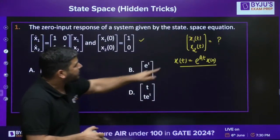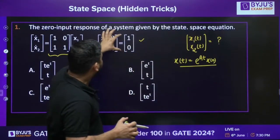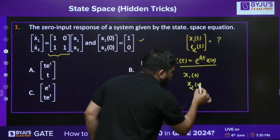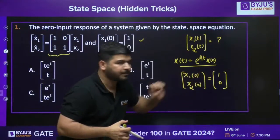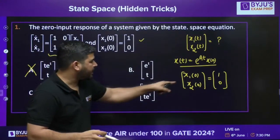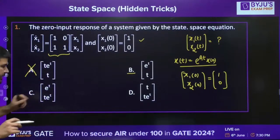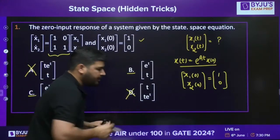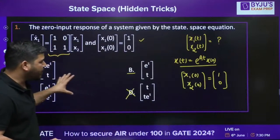The trick is: for x(t), if we put t=0, we should get the initial condition — which is [1, 0]. Checking each option at t=0: option one gives [0, 0] — wrong. Option two gives [1, 0] — might be correct. Option three gives [1, 0] — might be correct. Option four gives [0, 0] — wrong. So we've eliminated two options.